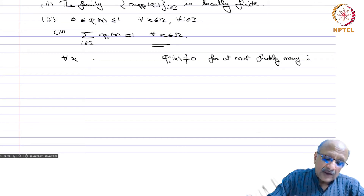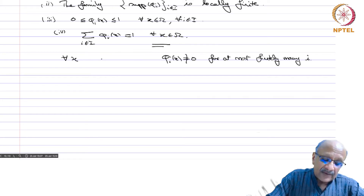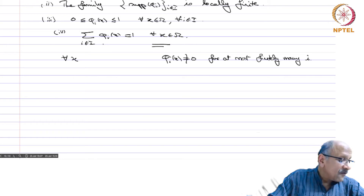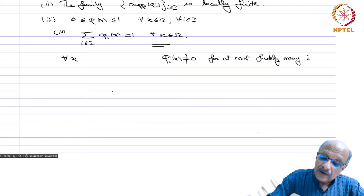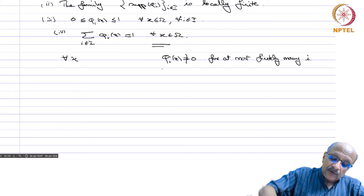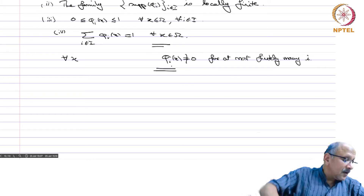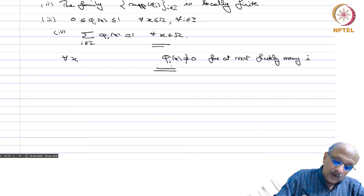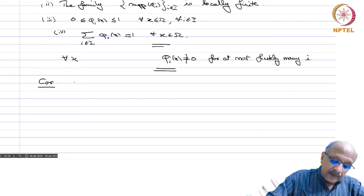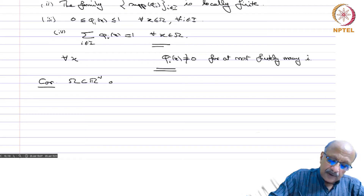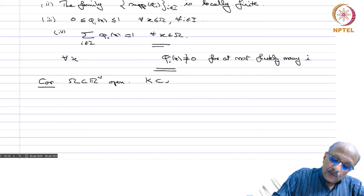Because we have taken the constant function 1 and broken it up as a sum of C-infinity functions, we call it a C-infinity partition of unity. As a simple corollary, let omega be open in R^n and let K be a compact subset of omega.